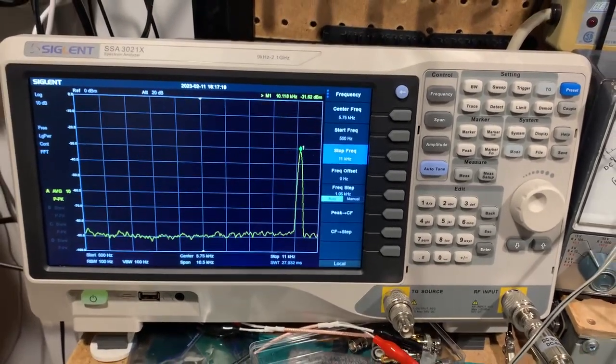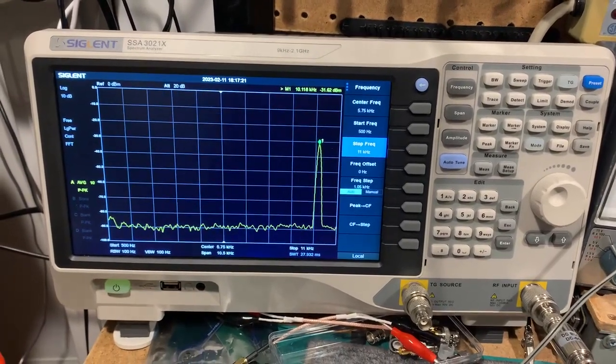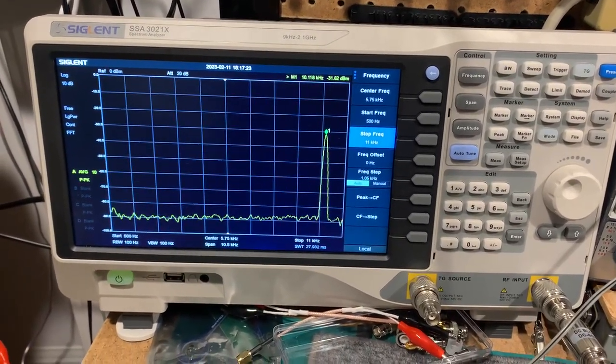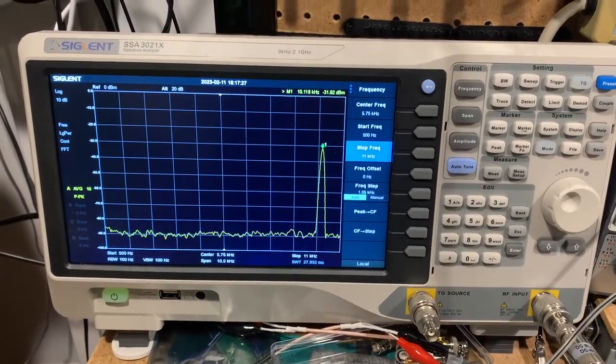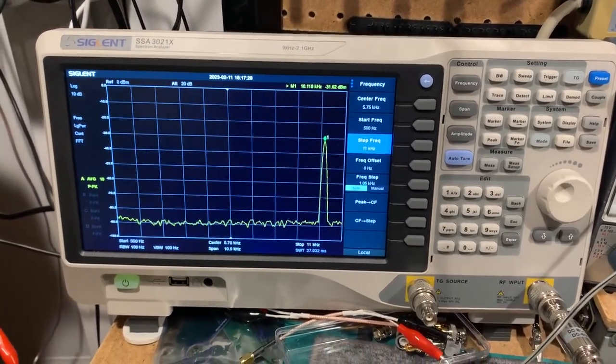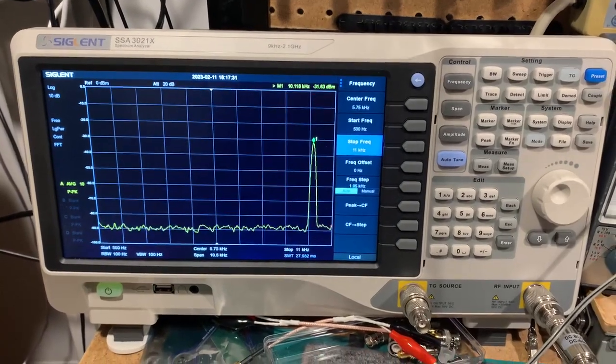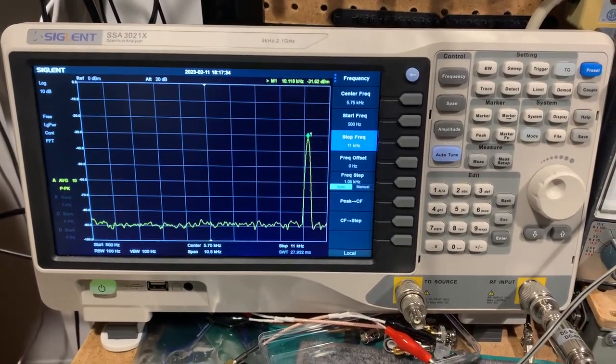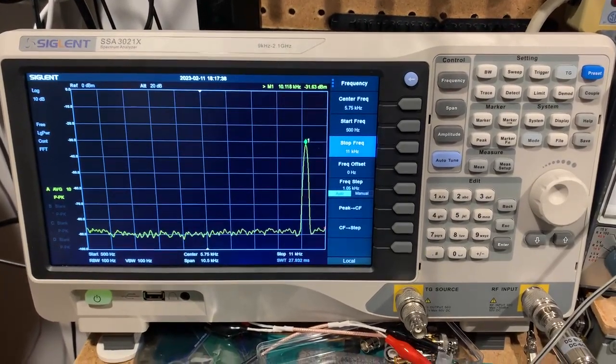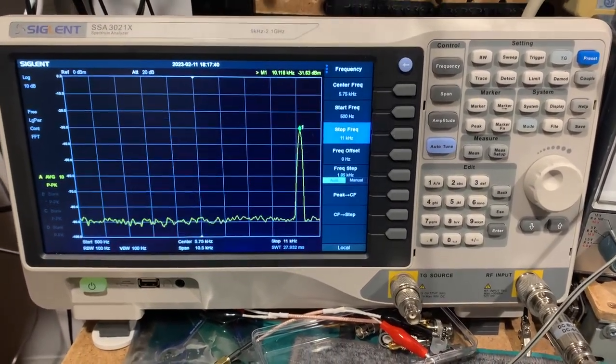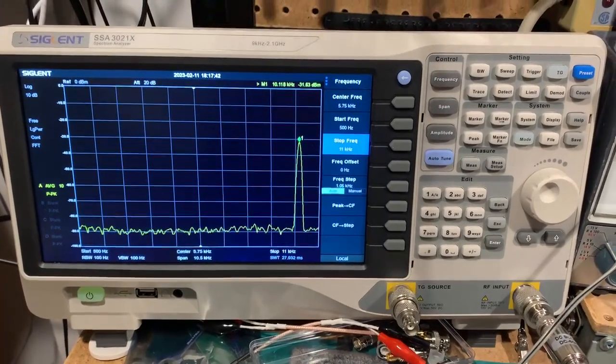I thought I'd check out the low frequency response of this SIGLAND SSA3021X spectrum analyzer, which is rated to go down to nine kilohertz. So I thought I'd just see if it would detect frequencies below nine kilohertz. I thought it would, but with a tail-off in response as it falls below its spec, because perhaps the capacitor value is such that it rolls off sharply after nine kilohertz.